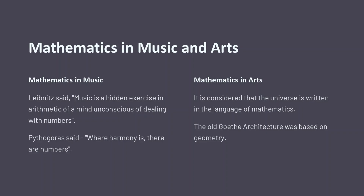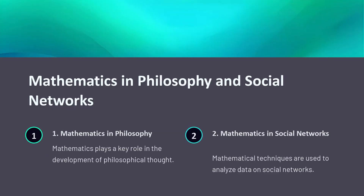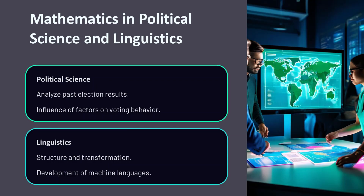Mathematics and the arts are more connected than they might seem. From the rhythmic patterns in music to the geometric structures in visual arts, mathematics provides a framework for understanding and creating beauty. It's also crucial in philosophy, social networks, political science — where it helps analyze voting patterns — and linguistics, including the study of machine languages.